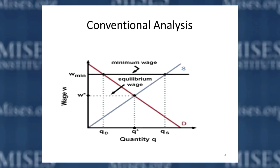So here is the conventional analysis. You have a demand for labor — what employers are willing to pay for workers. The demand for labor is basically how much productivity additional labor can provide a company. Employers are looking at how much to hire based purely on the productivity of labor, with very little or no other considerations in mind.